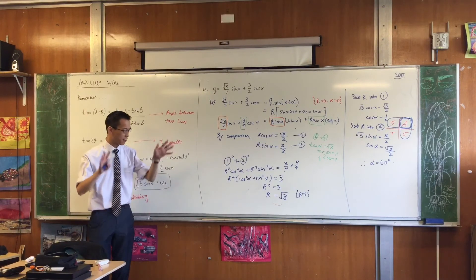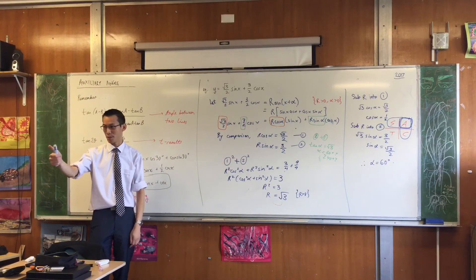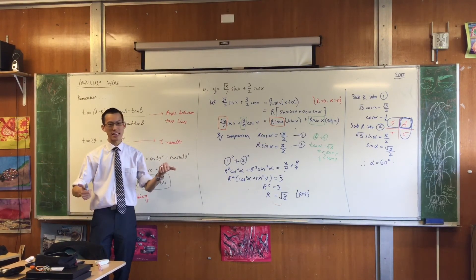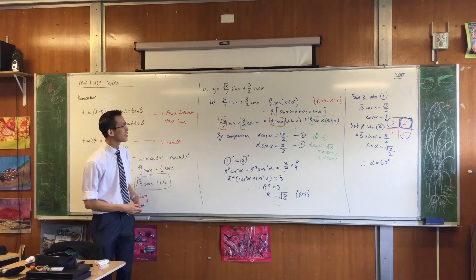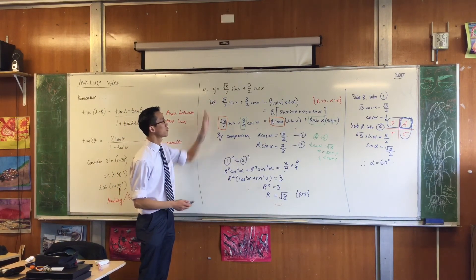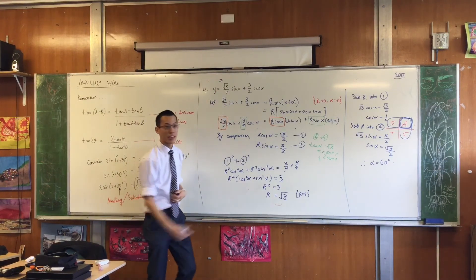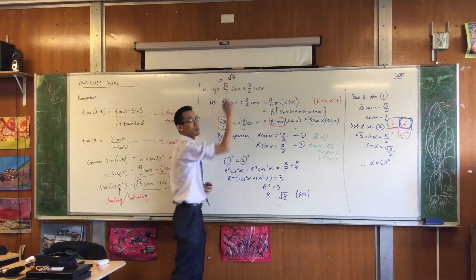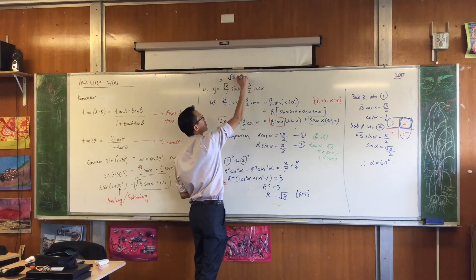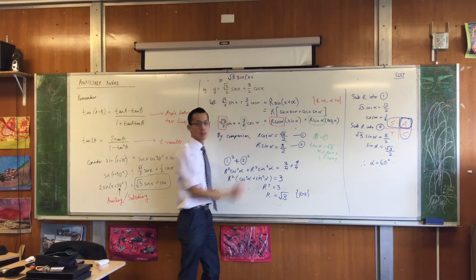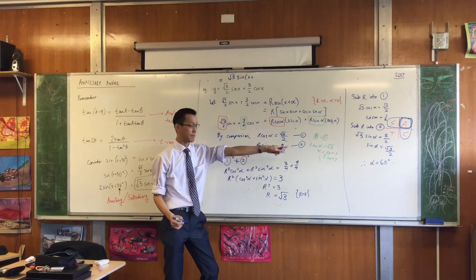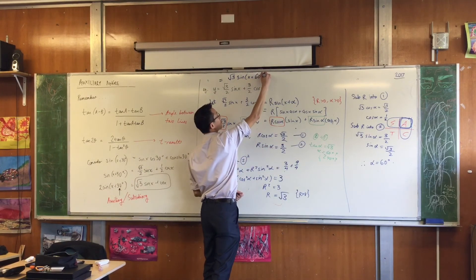Okay, exhale. You found R, that's the magnitude, you found alpha, that's the auxiliary angle. So now I can say, this thing up here is not just equal to the sum of two functions. It's also equal to, let's put it all together, root three sine of x plus the answer I found over here. Done.